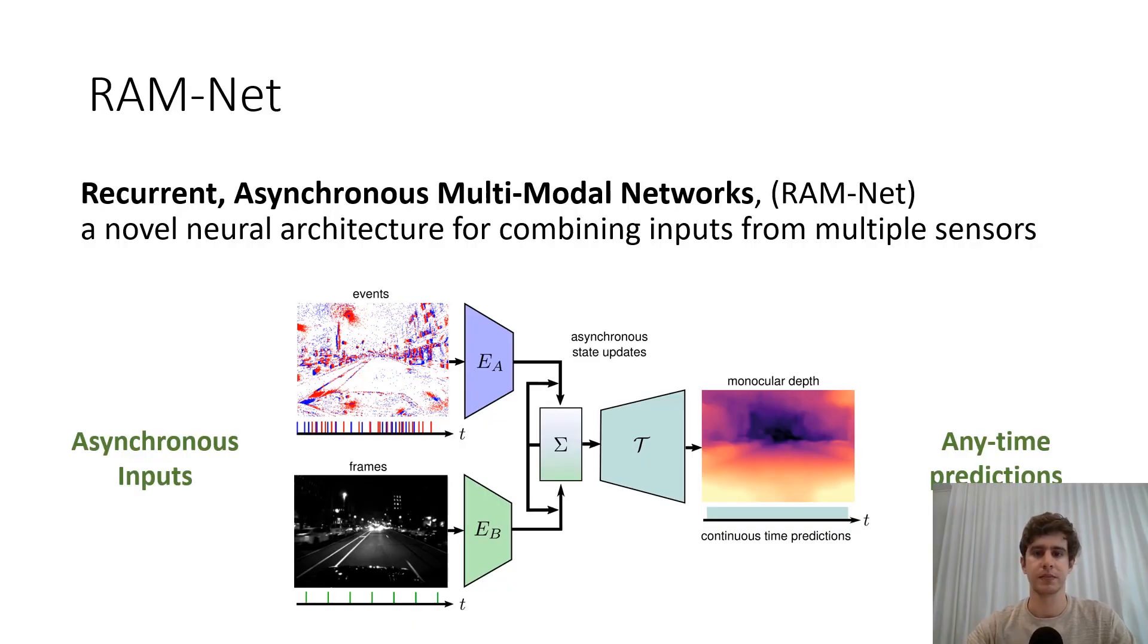Recurrent asynchronous multimodal networks, aka RAM-Nets, extend traditional RNNs by combining inputs from multiple sensors which are asynchronous and irregular. They combine these inputs into an anytime continuous time prediction at the output. In this work, we apply RAM-Net to the task of monocular depth estimation from events and frames.